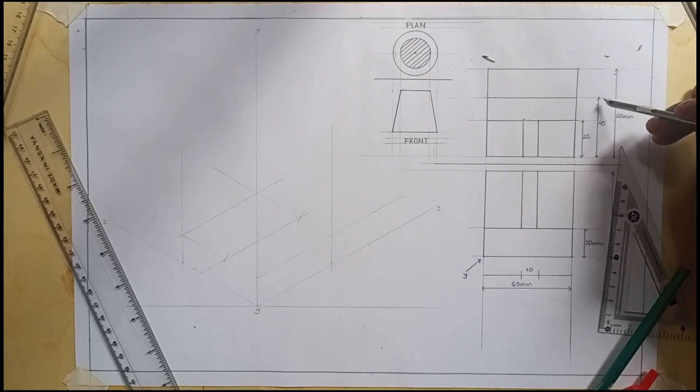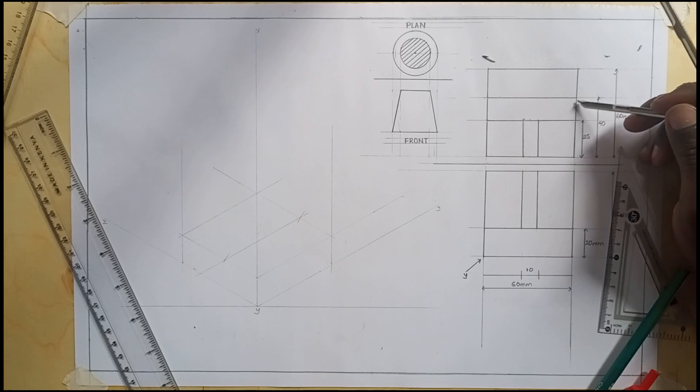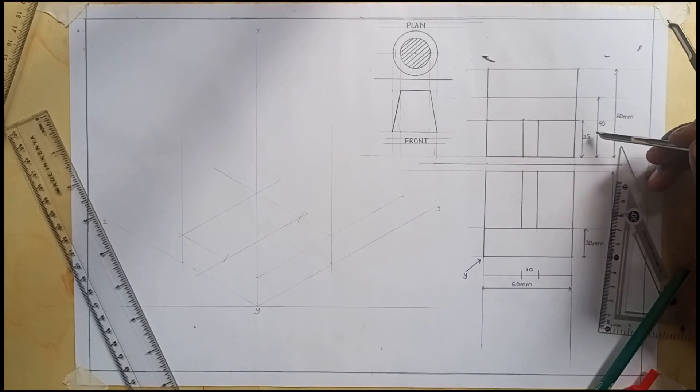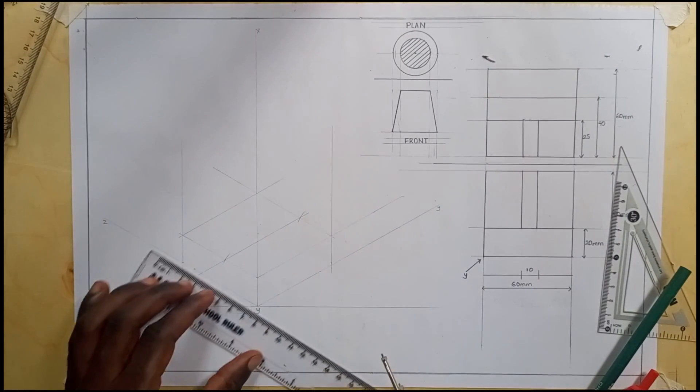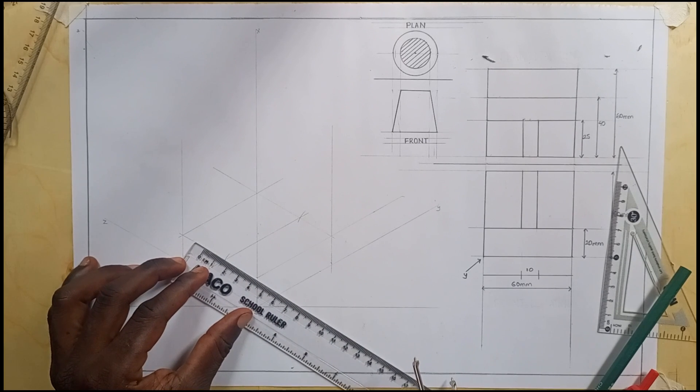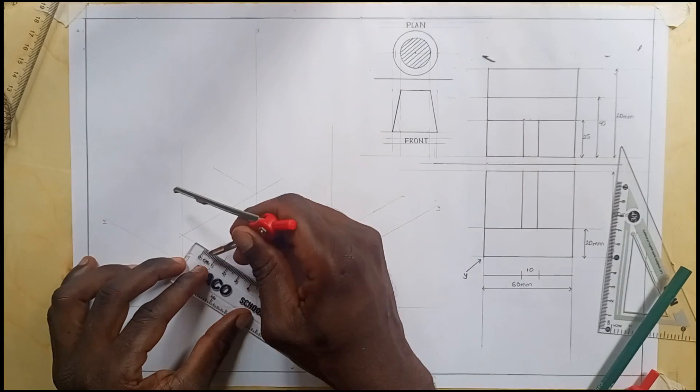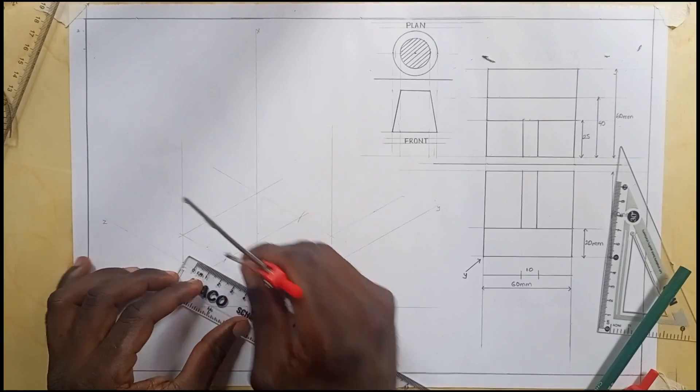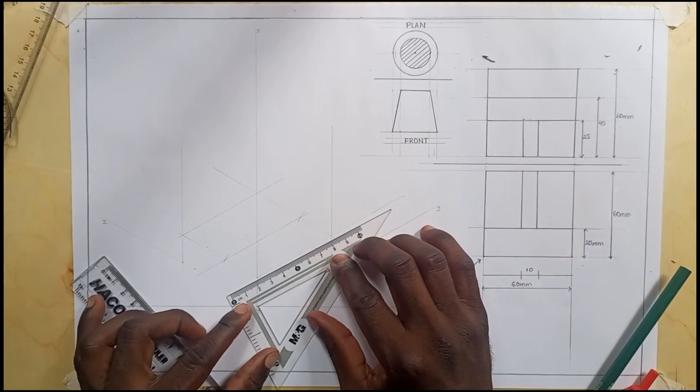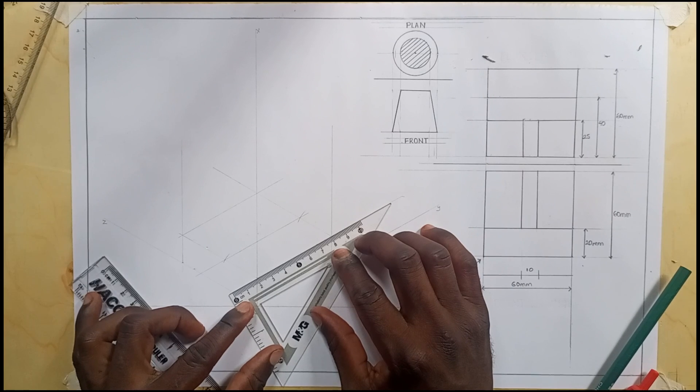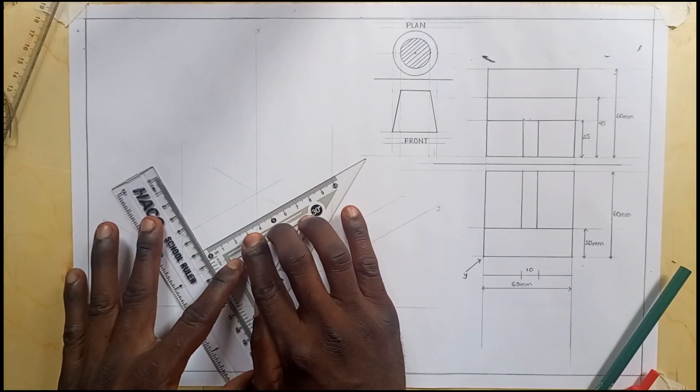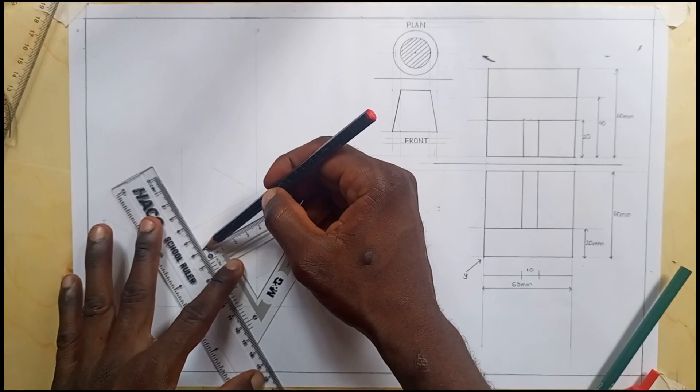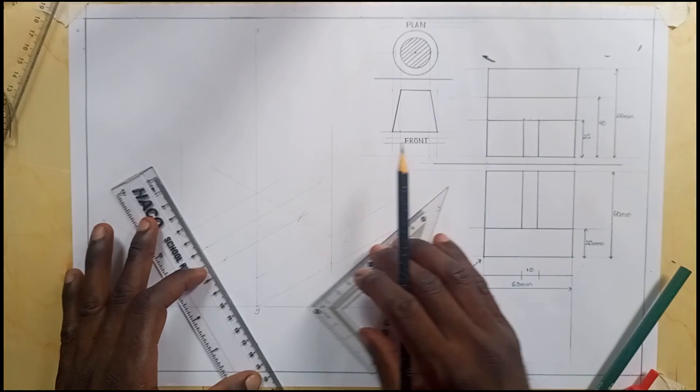We have 40 and 25, but now we want to get this distance here, right? So we shall get 40 minus 25, which is around 15. So along the Z axis, measure off 15. Using your set square, parallel out one of the lines. I'll draw off that line.